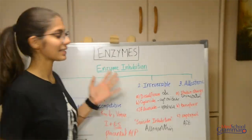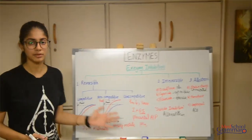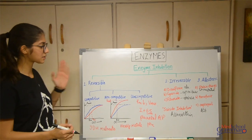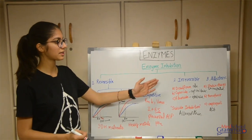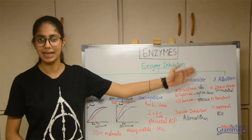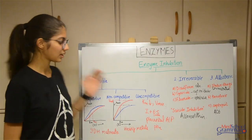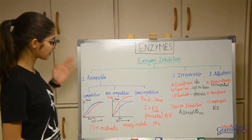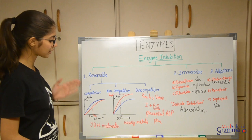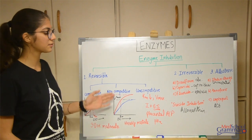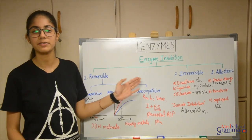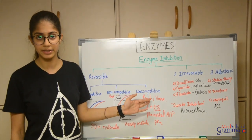So that covers enzyme inhibition. We had three types: reversible, irreversible, and allosteric. Reversible was further divided into competitive, non-competitive, and uncompetitive.